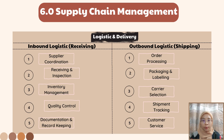For outbound logistics, also known as shipping: first, order processing — after a customer places an order, we prepare the product as ordered. Second, packaging and labeling — we carefully roll the product and place it in a protective plastic cover, then label the customer's information details on it. Third, carrier selection — we choose a reputable shipping company such as FedEx to deliver our customer's products. Fourth, shipment tracking — we provide our customers with a tracking number so they can track their product's whereabouts. Fifth, customer service — we assist customers if they have inquiries or problems.